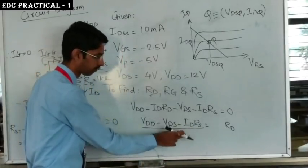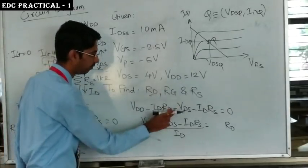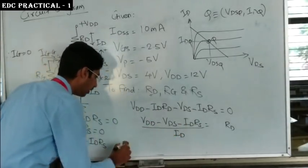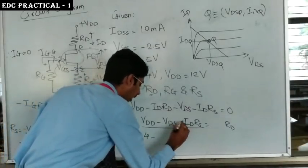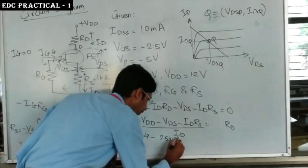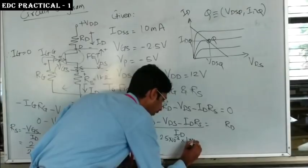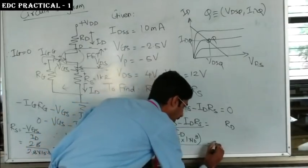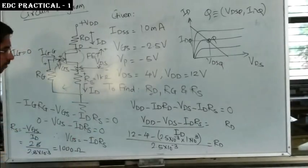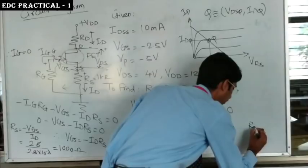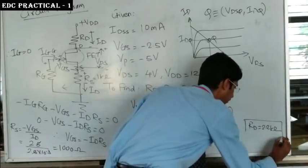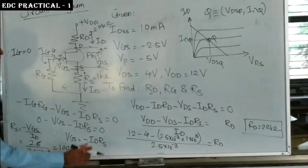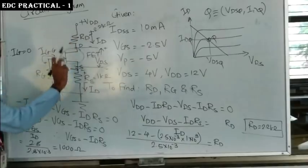Substituting into the RD formula: RD = (12 − 4 − 2.5×10⁻³ × 1×10³) / (2.5×10⁻³) = (12 − 4 − 2.5) / 0.0025 = 2200 Ω. So RD = 2.2 kΩ. We have now found RS = 1 kΩ and RD = 2.2 kΩ.